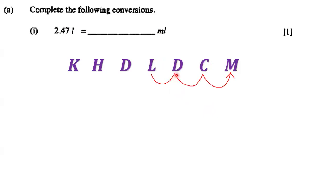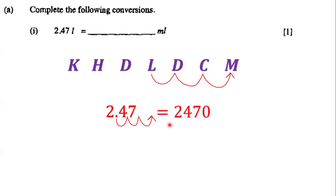We move over three times to the right — one, two, three. We have 2.47, and the decimal point moves three places to the right, giving us 2,470.